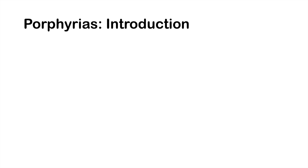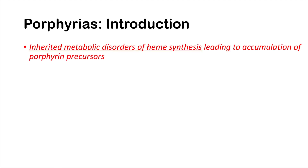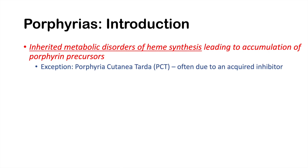In this lesson we're going to go over an overview of a variety of different porphyria conditions, and we're going to talk about specifically two of the most common porphyria conditions later on. Porphyrias are inherited metabolic disorders of heme synthesis leading to accumulation of porphyrin precursors. The exception to this rule of being inherited is porphyria cutanea tarda, or PCT, which is often caused by an acquired inhibitor.